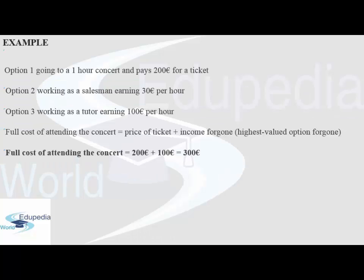For example, if I am going to a one-hour concert and pay 200 euros for a ticket, option two is I can work as a salesman earning 30 euros per hour, and option three is I can work as a tutor earning 100 euros per hour. The full cost of attending the concert will be the price of the ticket plus the income foregone — the highest value foregone, which is 100 euros from tutoring. So the full cost of attending the concert will be 200 euros for the ticket plus 100 euros that could have been earned as a tutor — totaling 300 euros as the full cost of attending the concert.